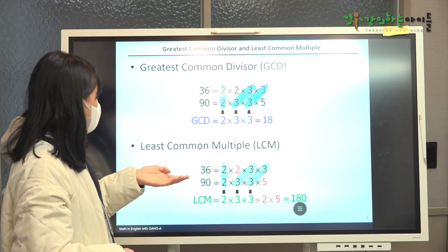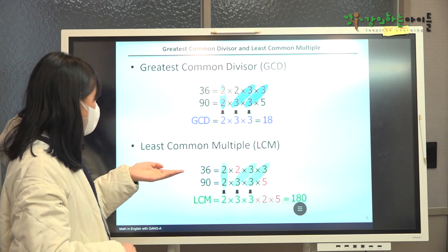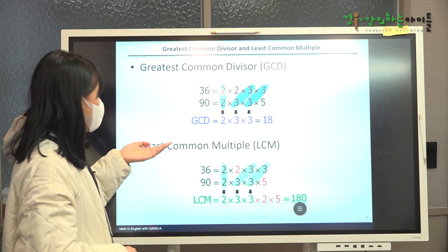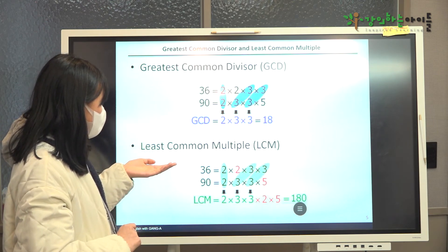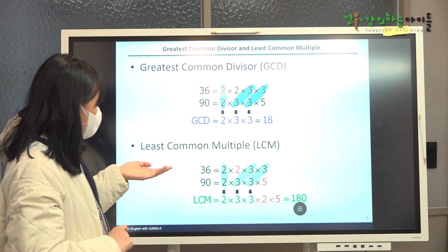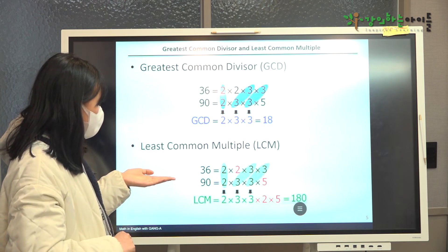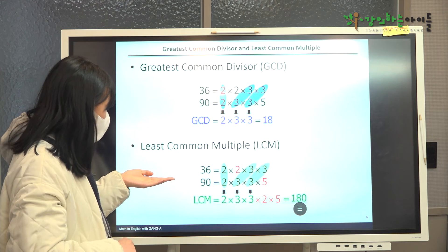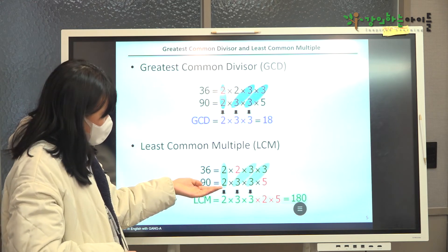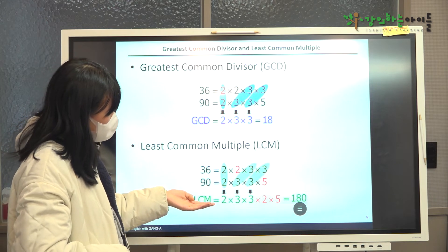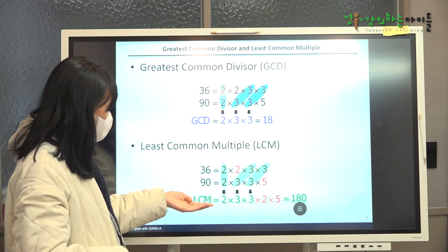In addition, we can obtain least common multiple by multiplying greatest common divisor by the factors that are not circled. By the factors that are not circled, as shown here, which give us 180 as the least common multiple.